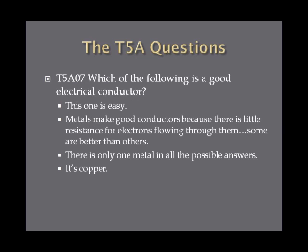Which of the following is a good electrical conductor? Metals make good conductors because there's little resistance for electrons to flow through them, and some metals are better than others. On the exam, there's only one metal among the possible answers, and that metal is copper. Everything else is an insulator. Just remember, metals make good conductors — you're looking for a metal.